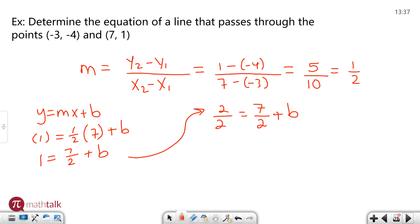So I need to subtract seven halves from both sides. Two halves minus seven halves is basically whatever two minus seven is, which is negative five over two. So my b value is negative five over two.